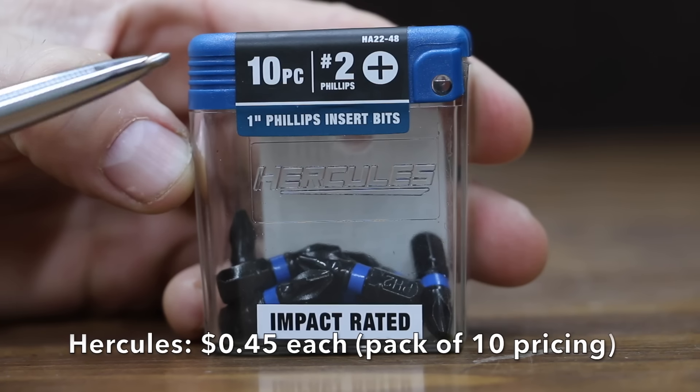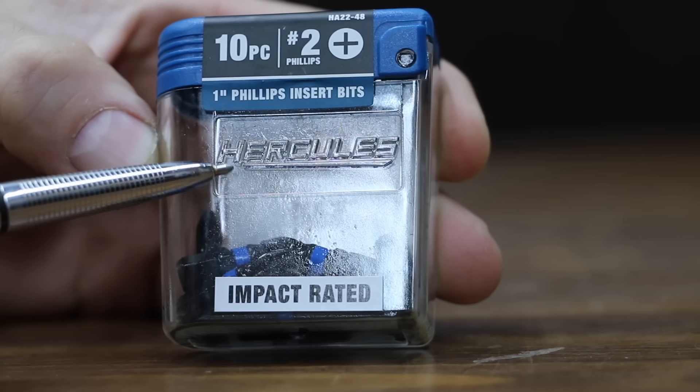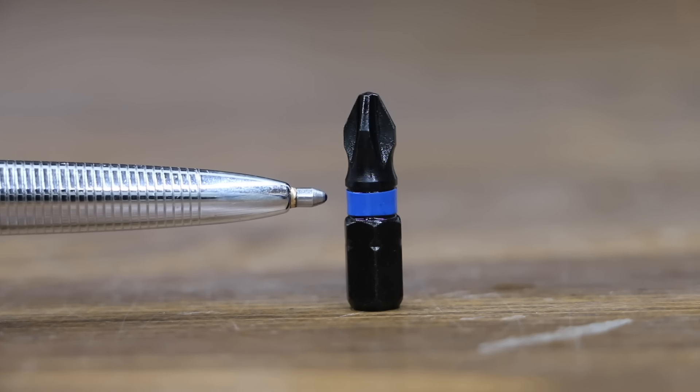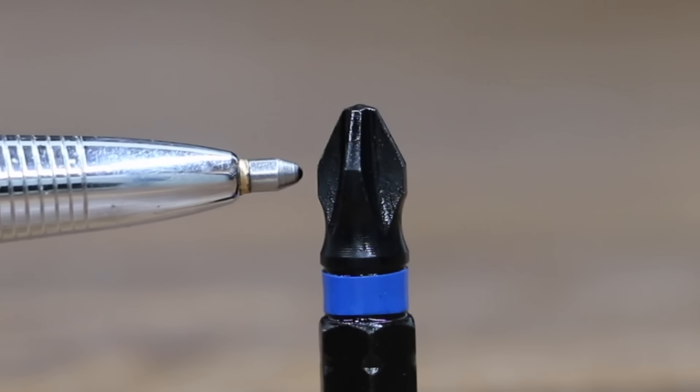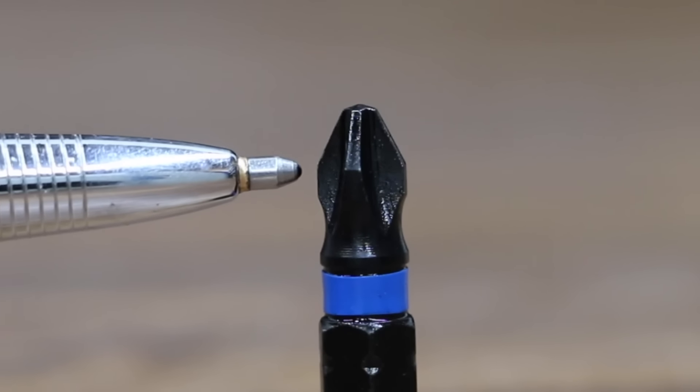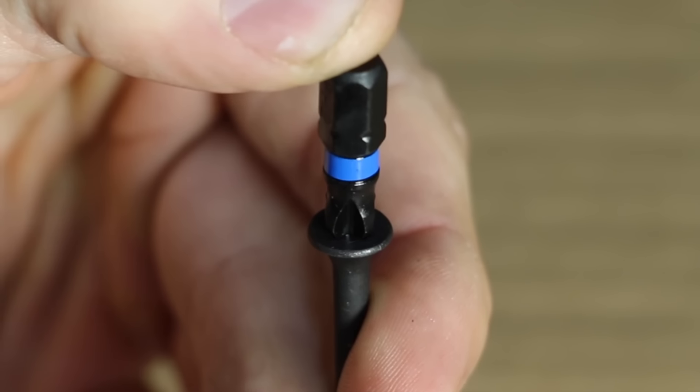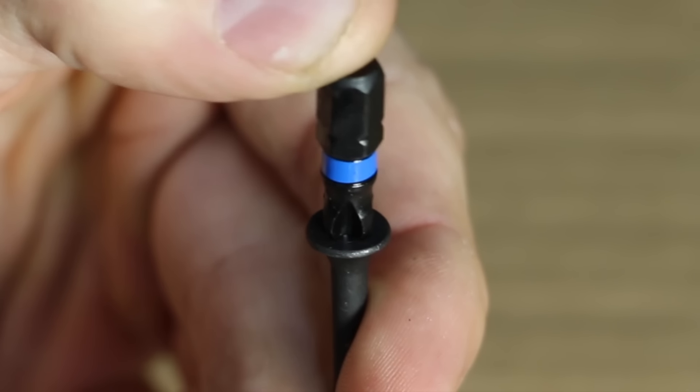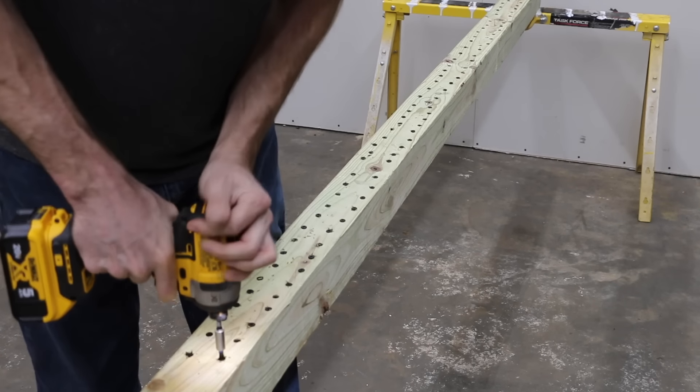Also sold at Harbor Freight is this Hercules brand costing 45 cents each, which is only 2 cents per unit more than the Bauer brand. Hercules Impact rated insert bits use exclusive bit-fit technology to provide exceptional fit and reduce stripping. They're built with hardened S2 tool steel. These Impact bits are professionally made in Taiwan. Unfortunately, the Hercules just doesn't offer a very good fit, quite a bit of wobble. I could definitely tell that the Hercules had quite a bit of wobble compared to the Bauer.